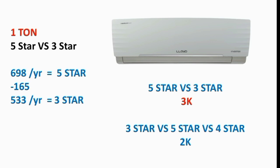The 3-star AC consumes around 698 units, while the 5-star AC consumes around 533 units. The difference between these two is 165 units. One unit costs around 5 to 7 to 10 rupees, so the 5-star AC saves significant electricity compared to the 3-star AC.